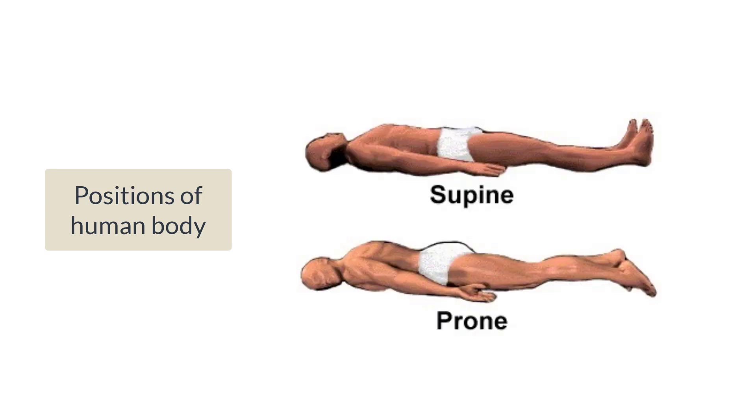Let us look at body positions. Supine position and prone position are lying-down positions. Supine position is lying down with the face directed upward; prone position is lying down with the face directed downward. Usually supine and prone are the positions of cadavers in the dissection hall. But when we explain structures and different organs in the body, we do it in relation to the anatomical position.